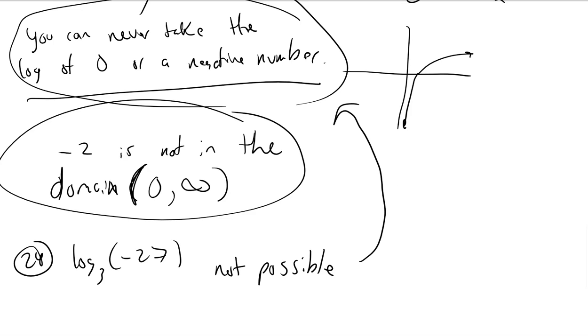You can't take the log of zero and you can't take the log of a negative. So number 24 is not possible for the same reason that number 23 is not possible.